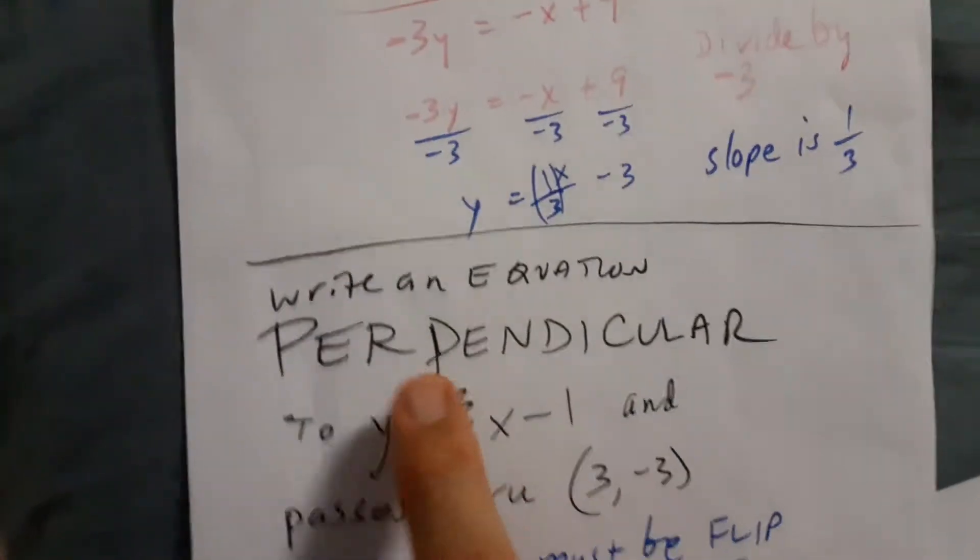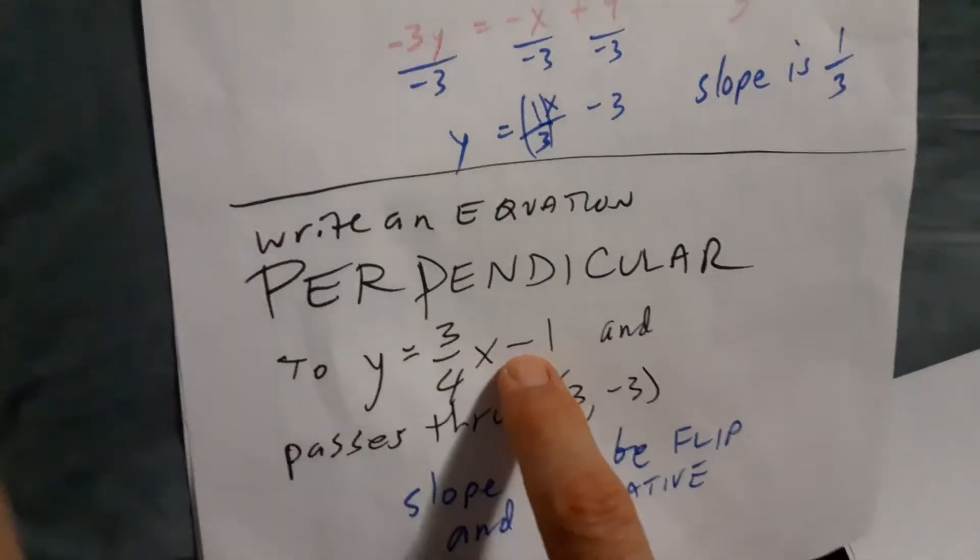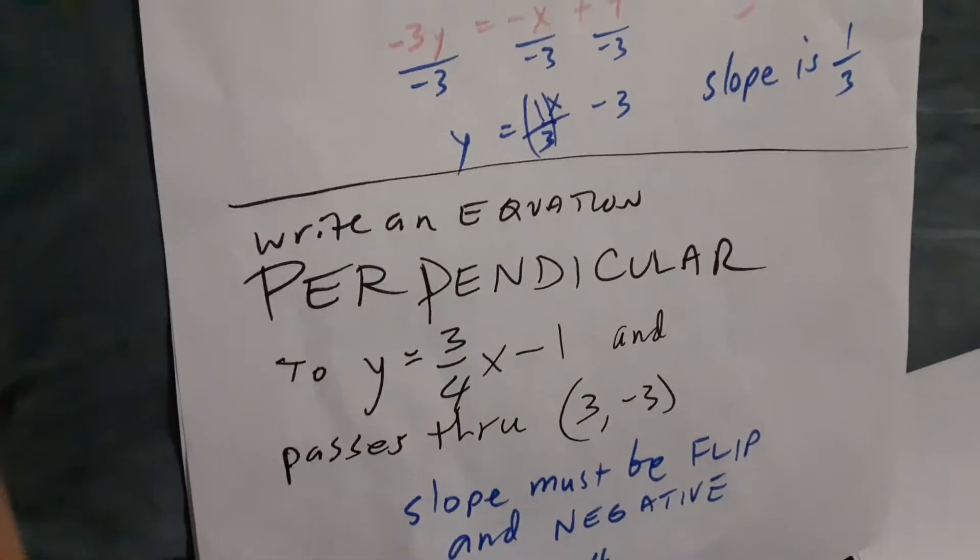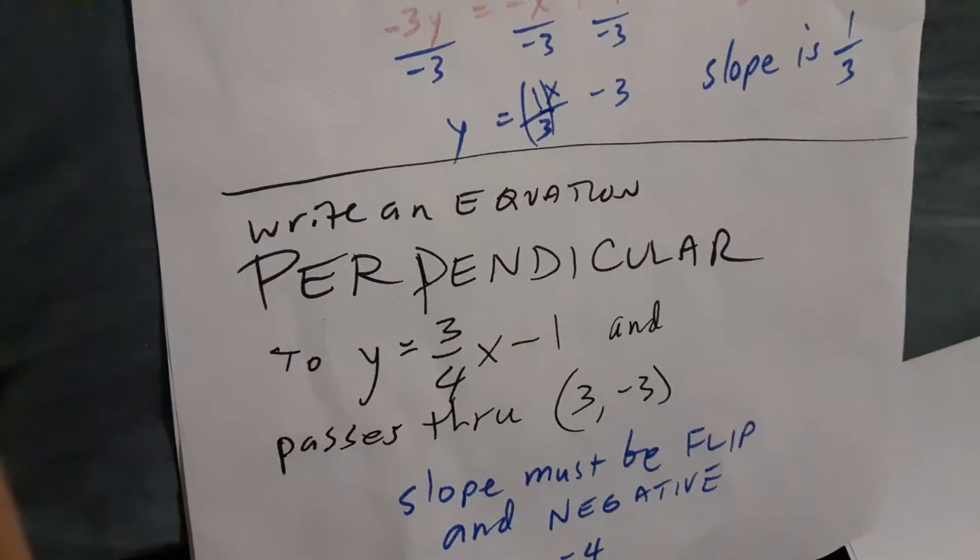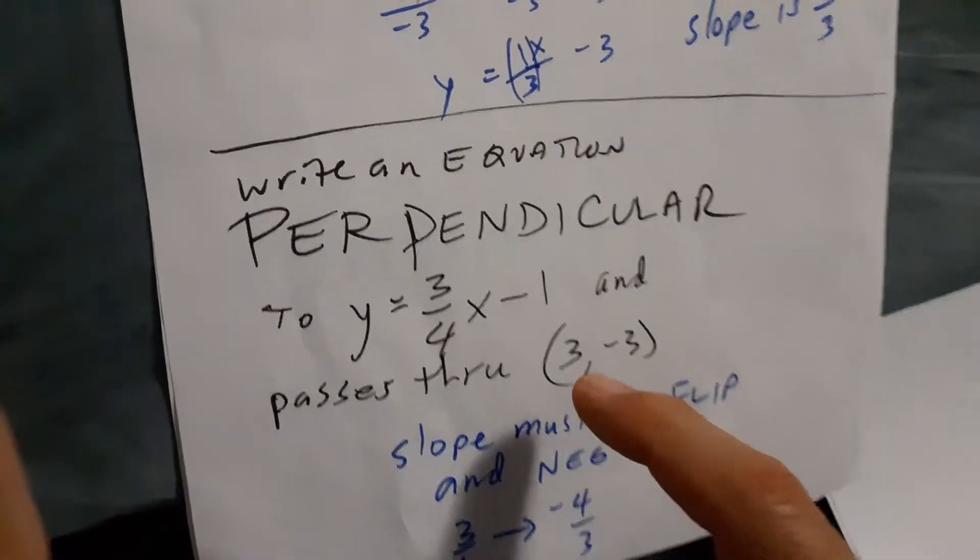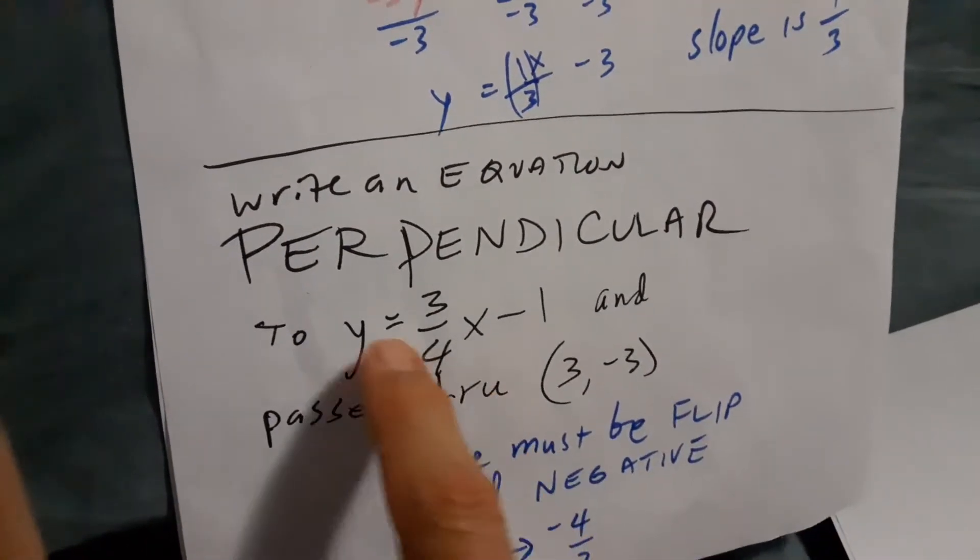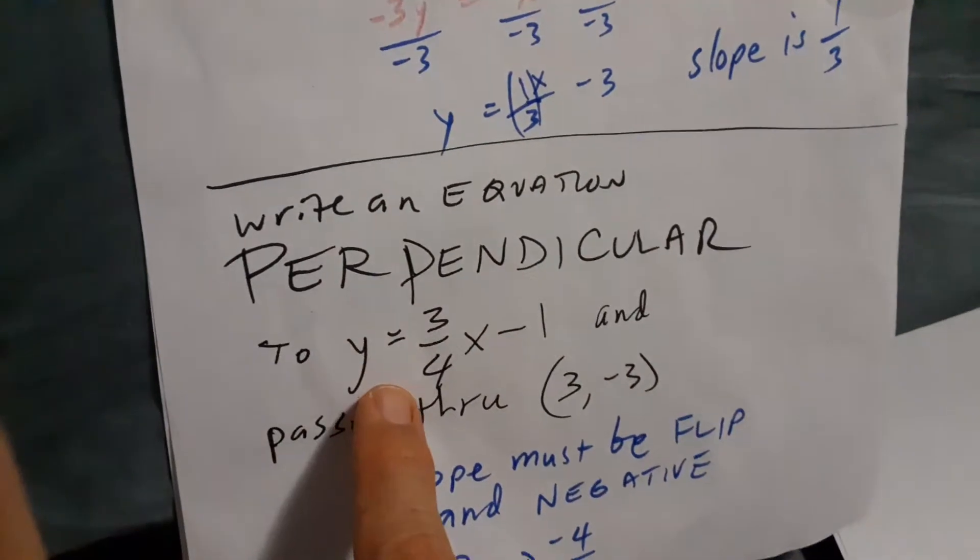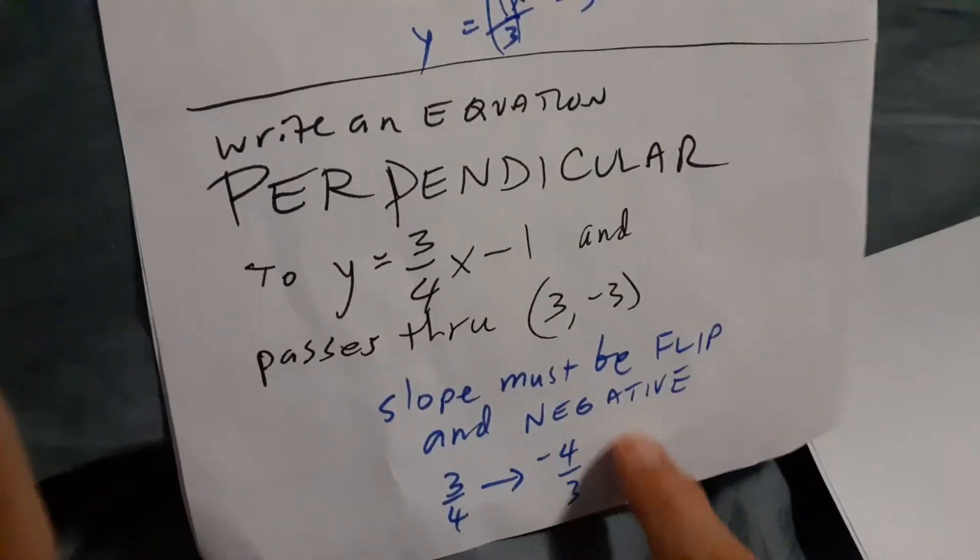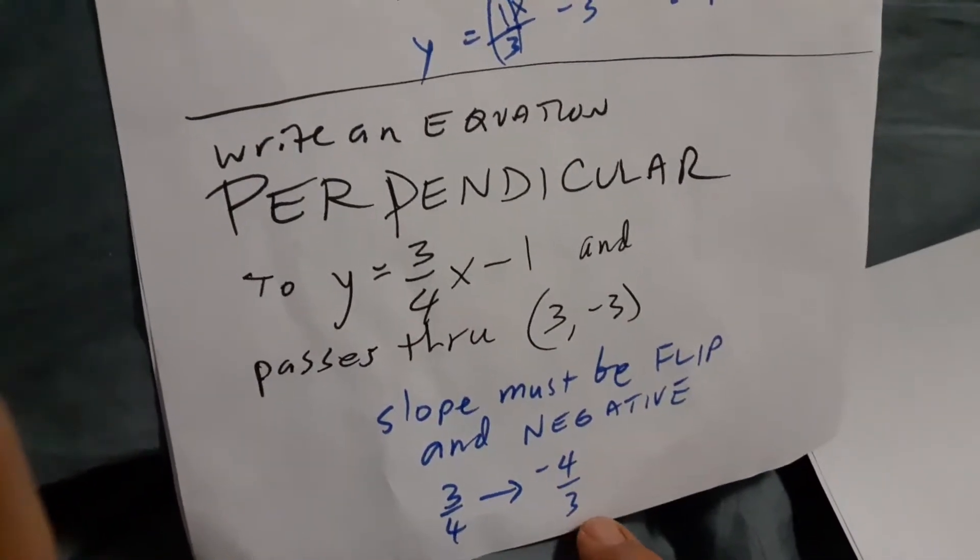Now, let's try to make a perpendicular line to this. That's nice, they got this all set up for us. 3 quarters, right? So, I just need to flip 4 over 3 and make it negative. So the new slope is going to be negative 4 thirds.